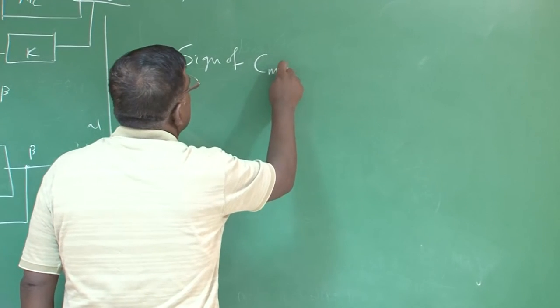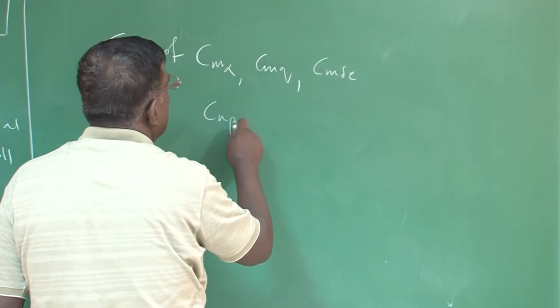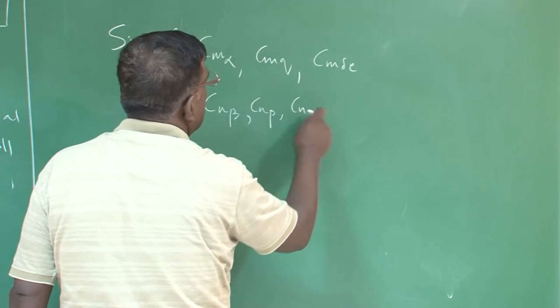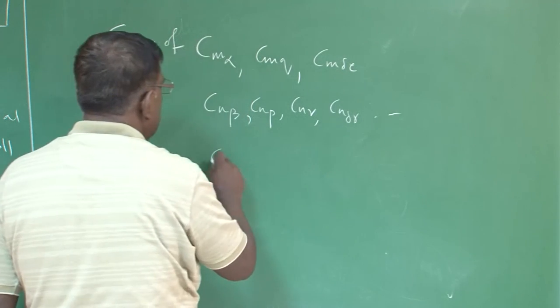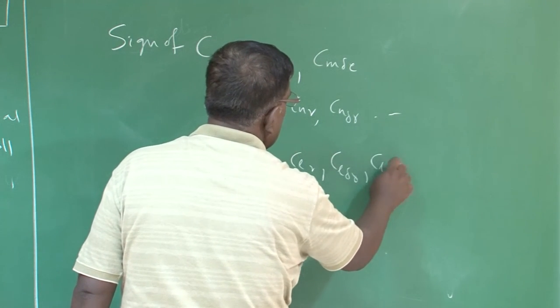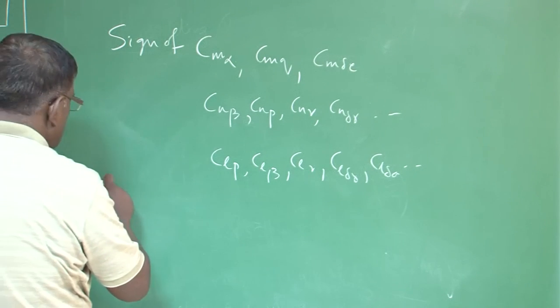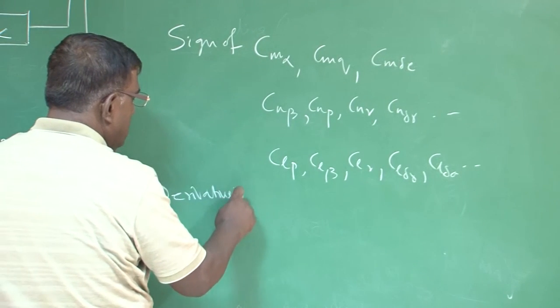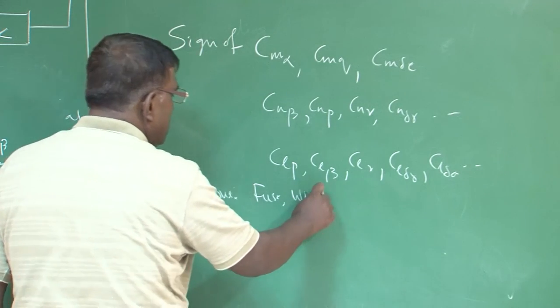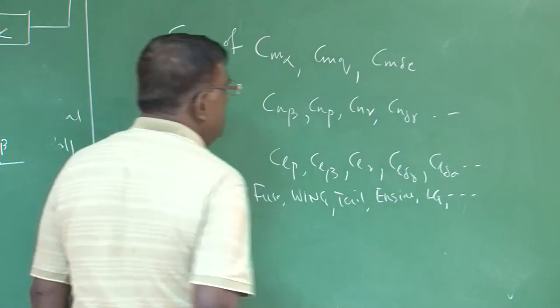Let us say, if I say C_m_alpha, C_m_q, C_m_delta_e, if I say C_n_beta, C_n_p, C_n_r, C_n_delta_r, like that. So we will C_Lp, C_L_beta, C_L_r, C_L_delta_r or C_L_delta_e. It is extremely important, and if you revisit and check whether you clearly understand, what are the signs of these derivatives, because these derivatives will have a contribution because of fuselage, because of wing, because of tail, because of engine, because of landing gear, so many, right.